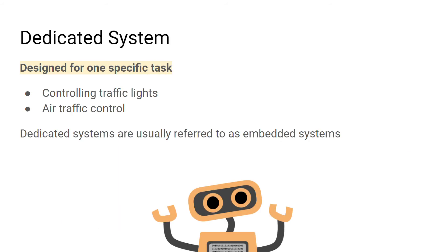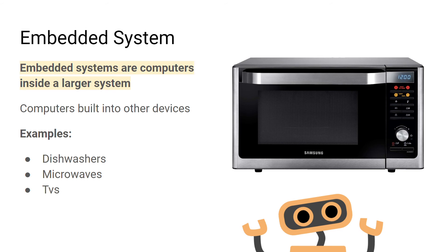When you design a computer system to perform one specific task, it is known as a dedicated system. Dedicated systems can be referred to as embedded systems, and some examples include a traffic light controlling system or an air traffic controlling system. When you take a dedicated system and place it inside of a larger system, it is referred to as an embedded system.